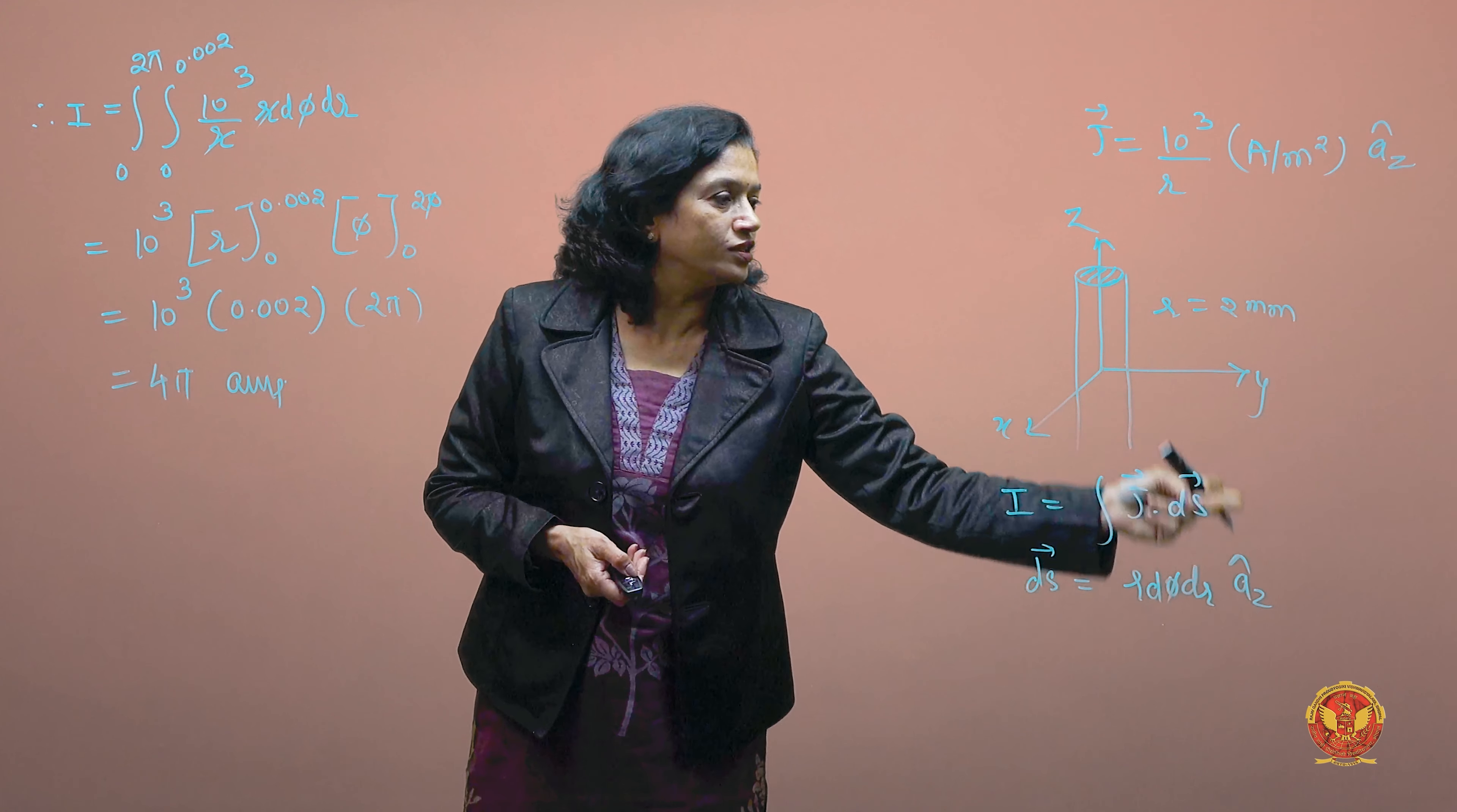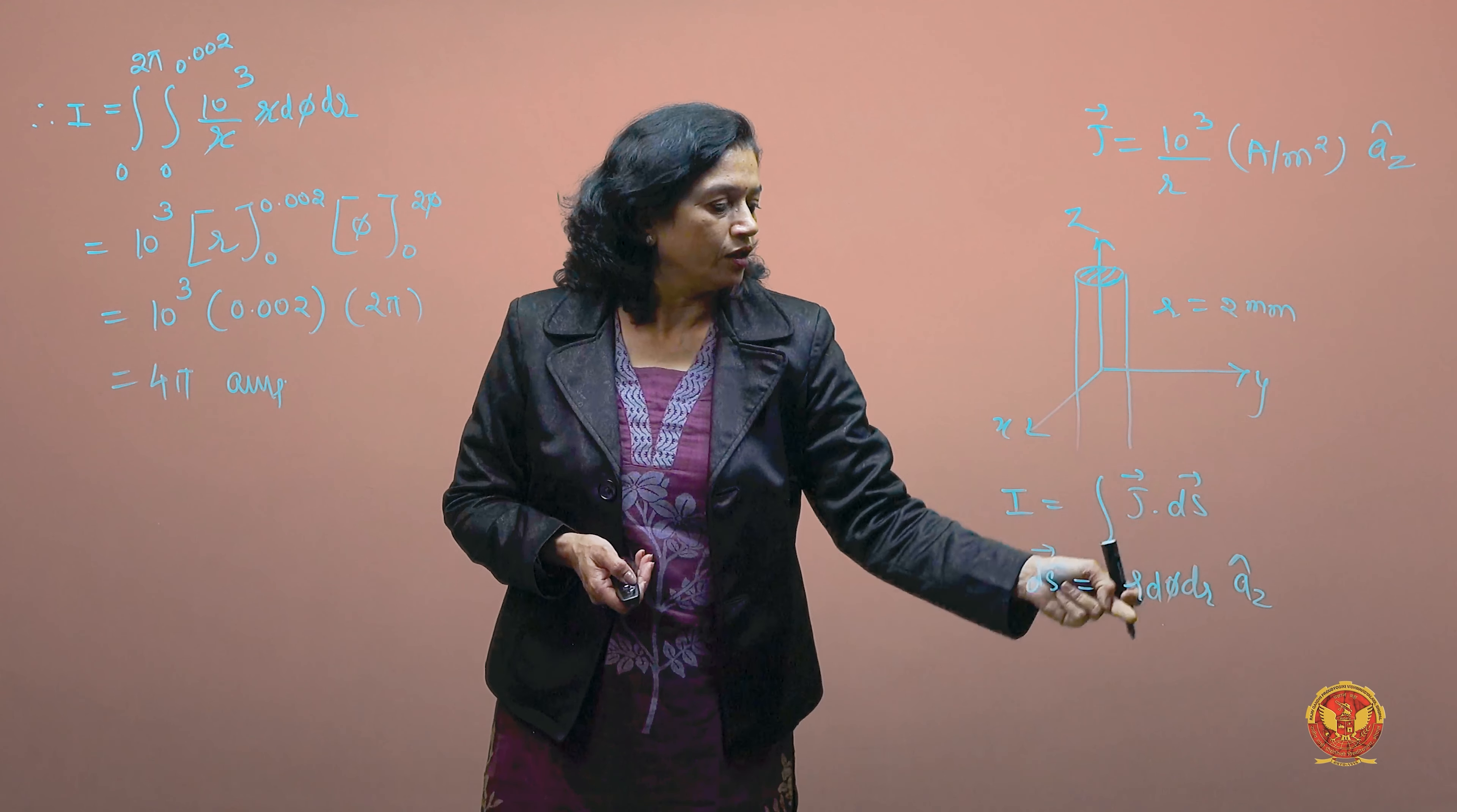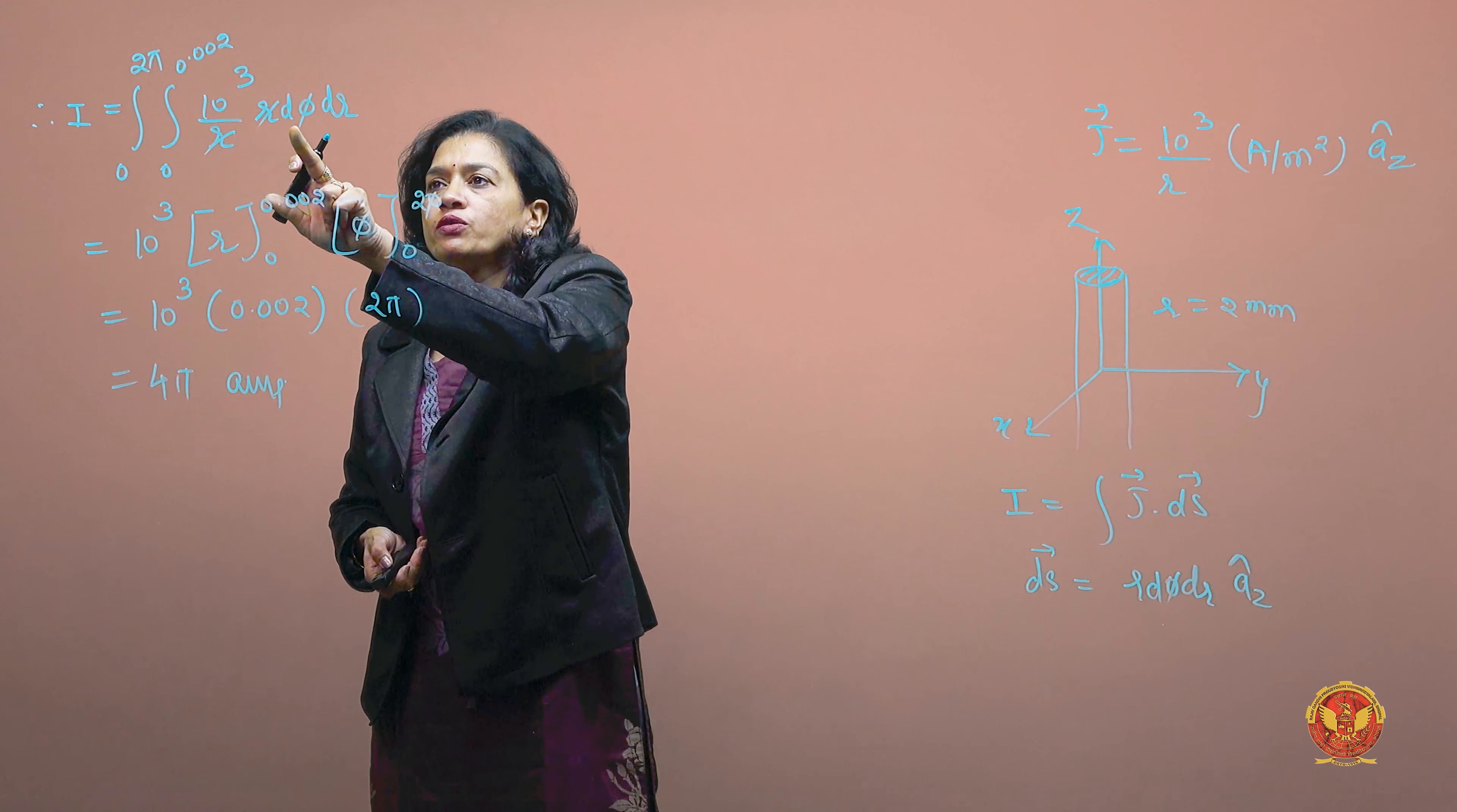So it will be (10³/r) times r dφ dr. The r cancels out, so finally we have the integration of 10³ dφ dr.